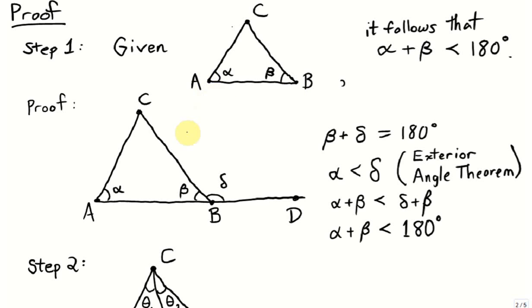Consider triangle ABC with angles alpha and beta. Extend side AB to a point D, marking the exterior angle delta at vertex B. By Euclid's Proposition 13, the linear pair theorem, beta plus delta equals 180 degrees. By Euclid's Proposition 16, the exterior angle theorem, alpha is less than delta. Adding beta to both sides gives alpha plus beta less than delta plus beta, which equals 180 degrees — proving any two angles sum to less than 180 degrees.